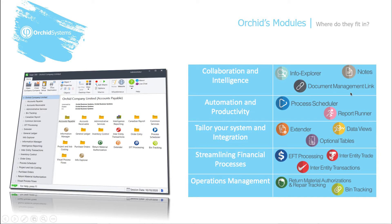The two other areas I'm not going to go through in any detail: streamlining financial processes consists of EFT processing, inter-entity trade, and inter-entity transactions, which are both for the multi-company or multi-entity environment. EFT processing is our most popular module and assists with funds transfer on the accounts payable, accounts receivable, and North American payroll side.